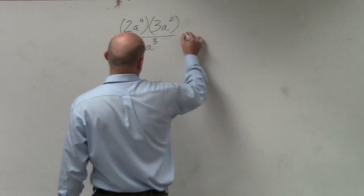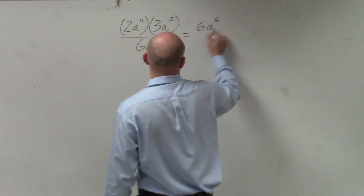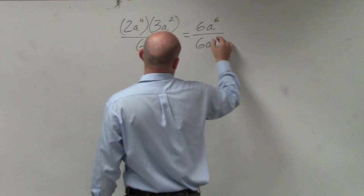So therefore, I can rewrite this as 6a to the 2 plus 4 is 6 power divided by 6a to the third.